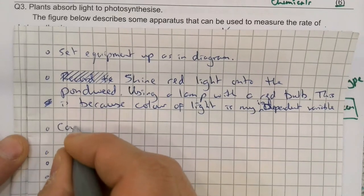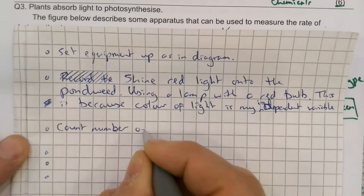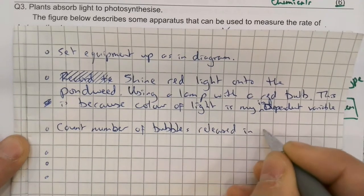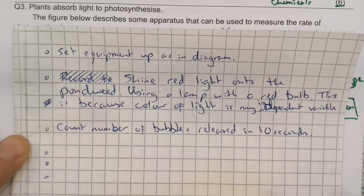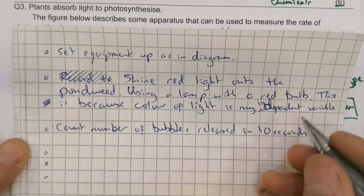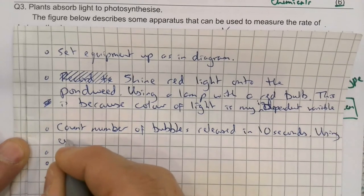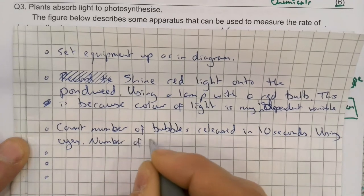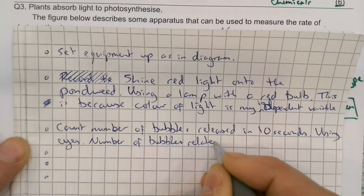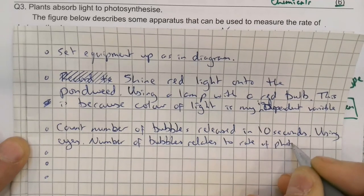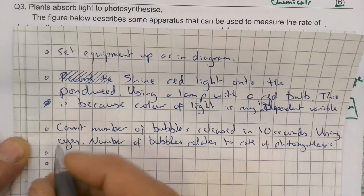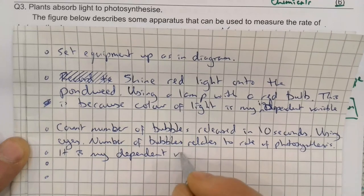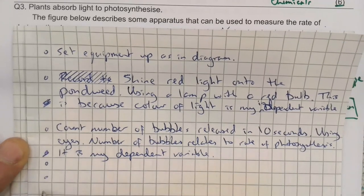What am I going to do then? I'm going to count number of bubbles released in ten seconds. Using what? Well, using my eyes. Why am I doing that? Using eyes. Why? Number of bubbles relates to rate of photosynthesis and it is my dependent variable, the thing we measure. Again, I've gone over that bullet point there, so I'm just going to add it to the bottom.